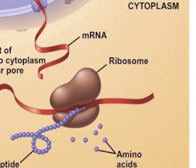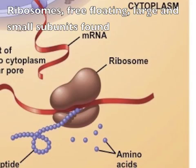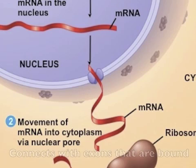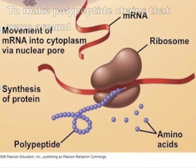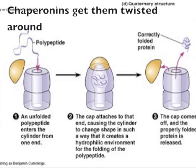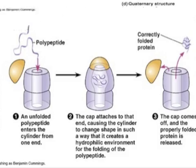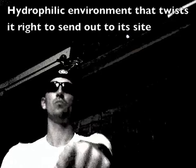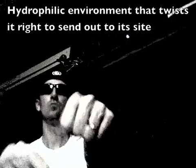Ribosome — free-floating large and small subunits come together, connecting with exons that are bound to make polypeptide chains. These wave around through primary and secondary structure, and chaperones get twisted around in the hydrophilic environment, twisting it right to send it out to its site.